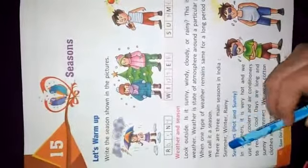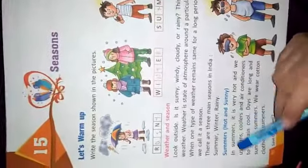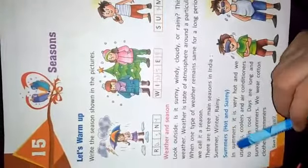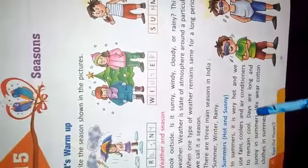There are 3 main seasons in India: summer, winter, and rainy. Firstly, summers — hot and sunny. In summers it is very hot and we use fans, coolers, and air conditioners to remain cool. These are the things we use to keep ourselves cool.